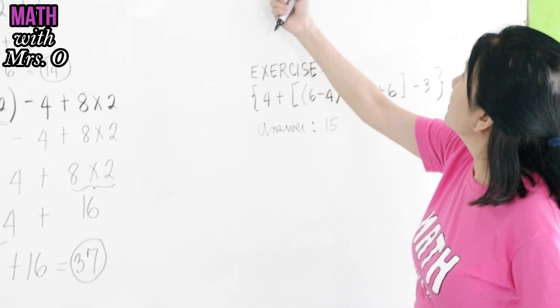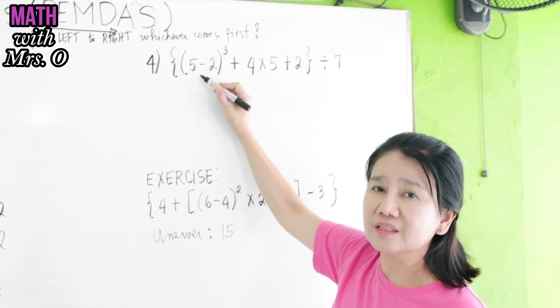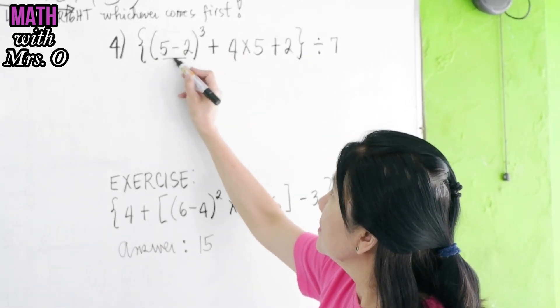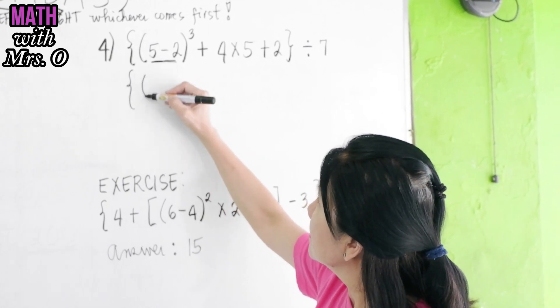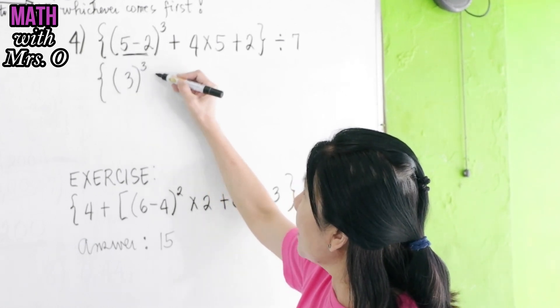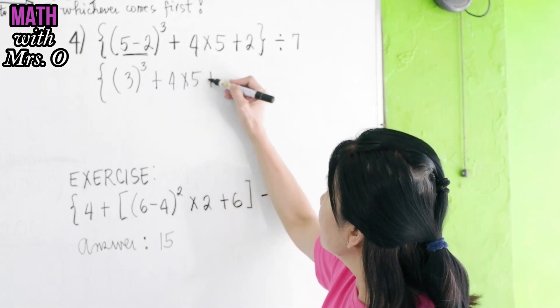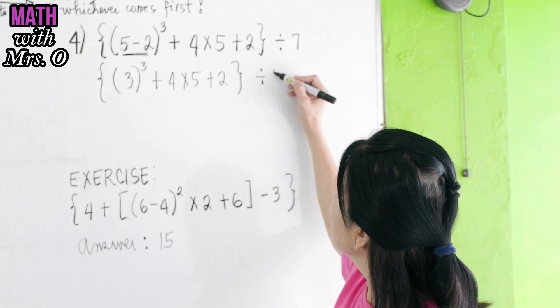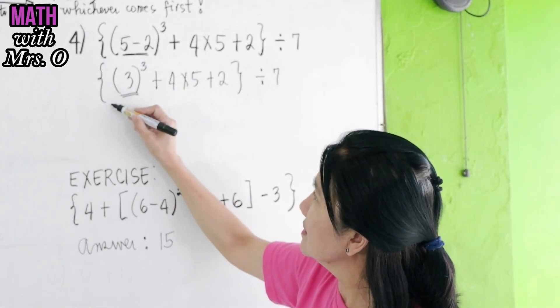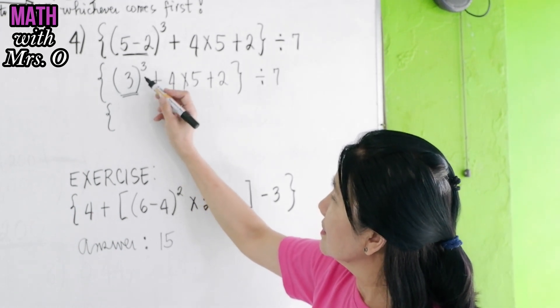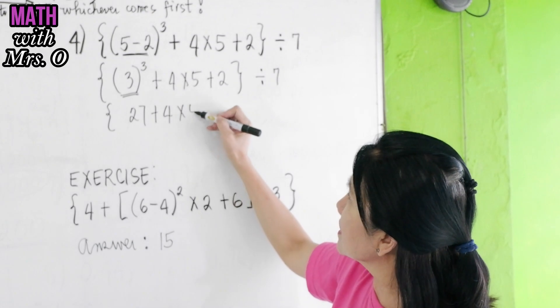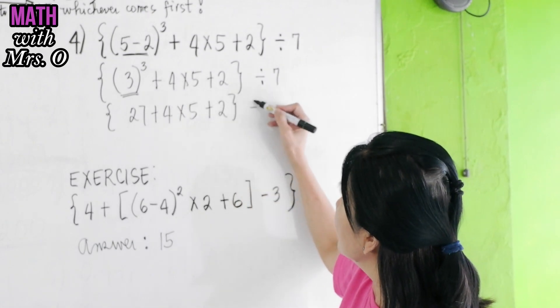Let's move to problem number four. In problem number four, this time, I have here a grouping and an exponential. So, simplify this. 5 - 2 gives us 3. And this 3 is raised to the third power + 4 × 5 + 2 ÷ 7. So, here, from left to right, you have E exponents. You simplify first this. 3 × 3 × 3. 3 × 3 is 9 × 3, that's 27. Plus 4 × 5 + 2. Everything is divided by 7.